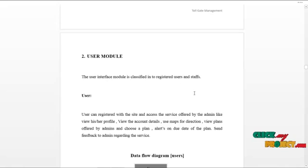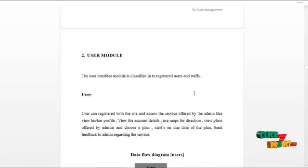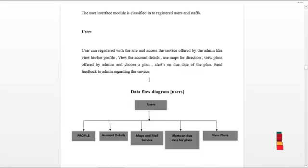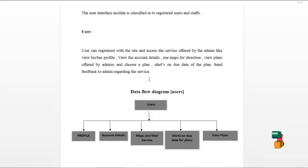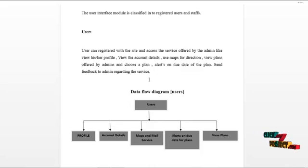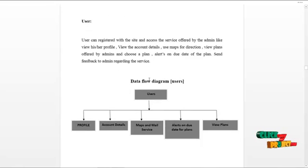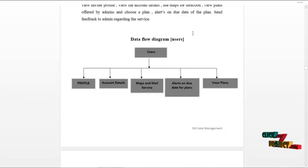The next module is the user module, which is classified into users and staff. The user can log in to the system and view or update their own profile details, or change their password for security reasons. User can view their account details, use maps for directions, view plans offered by the admin, and choose a plan. The user can also get alerts on the due date of the plan, and send feedback to the admin regarding their services.